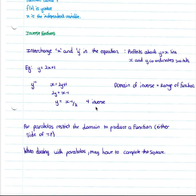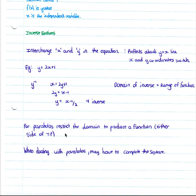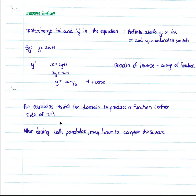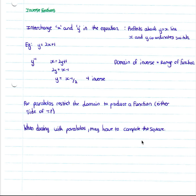For parabolas, it's important when you find the inverse to restrict the domain to produce a function. You must restrict it either side of the turning point so that you have a function. If you do not restrict it, it will not be a function, as you will have more than one y value per x value. When dealing with parabolas, in order to get the inverse function you may have to complete the square — if you are unsure how to do this, please watch our video on quadratic equations and inequalities.